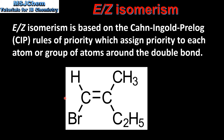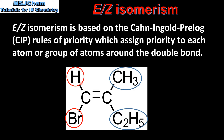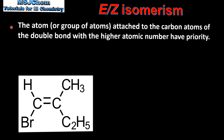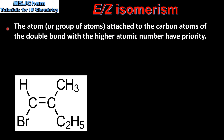In this molecule we have 4 different groups bonded to the carbon atoms in the double bond. To determine if this is the E or the Z isomer we assign priority to the atoms bonded to each carbon atom — the 2 groups bonded to the left hand carbon and the 2 groups bonded to the right hand carbon. The atom or group of atoms with a higher atomic number have priority.